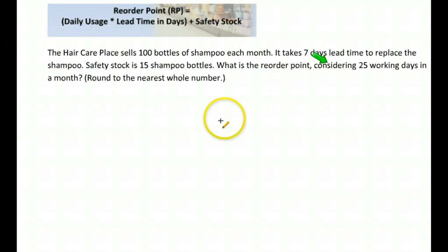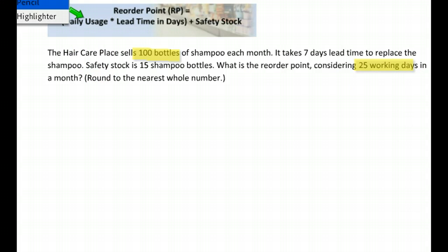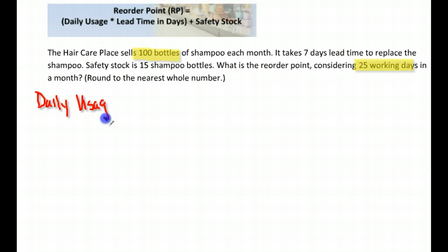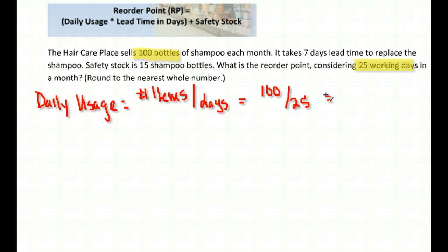Let's take a look at the important information given. They sell 100 bottles of shampoo each month and have 25 working days. We need to know the daily usage, but they didn't just give that to us. Before we can apply the formula, we need to find how many bottles they sell per day: 100 divided by 25 equals four bottles each day. That's our daily usage.